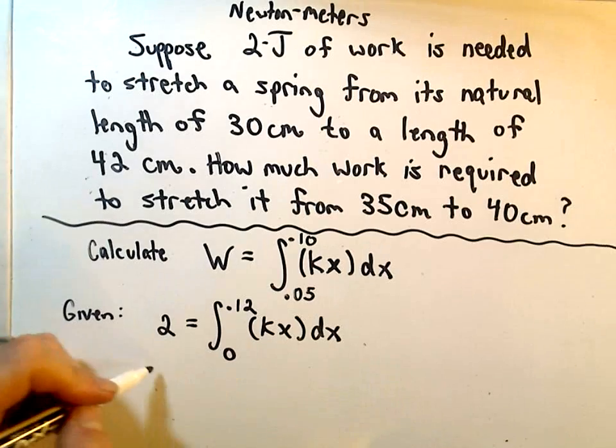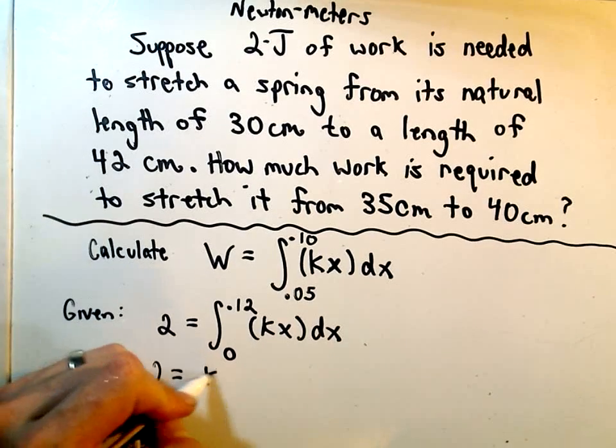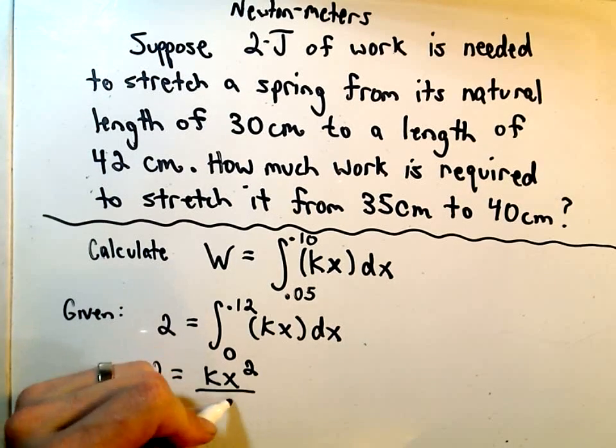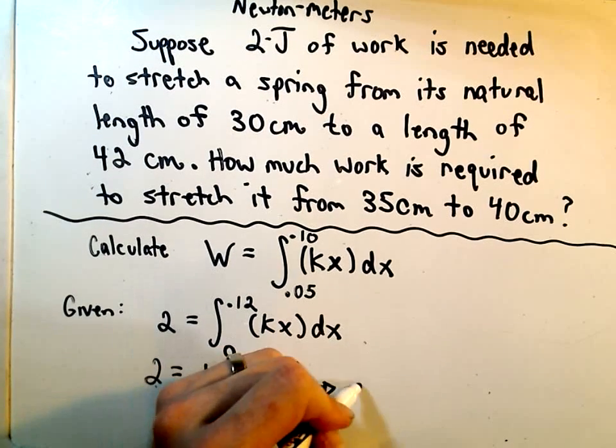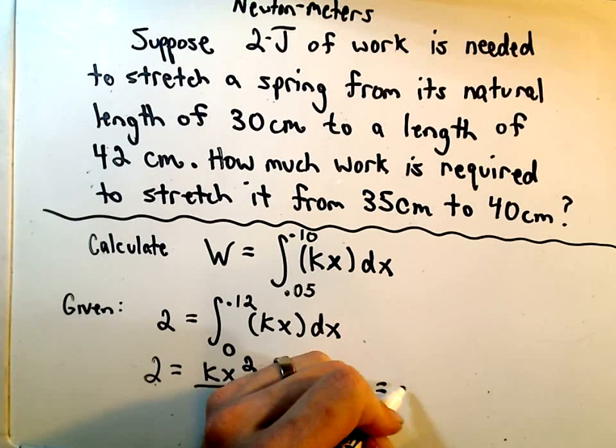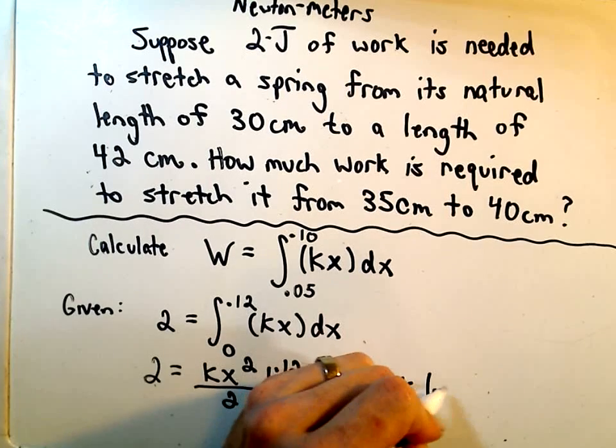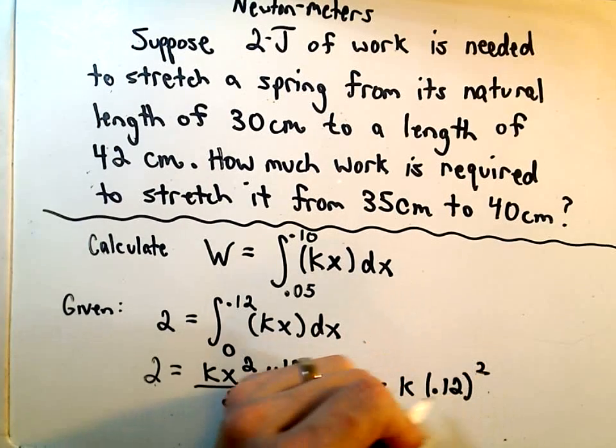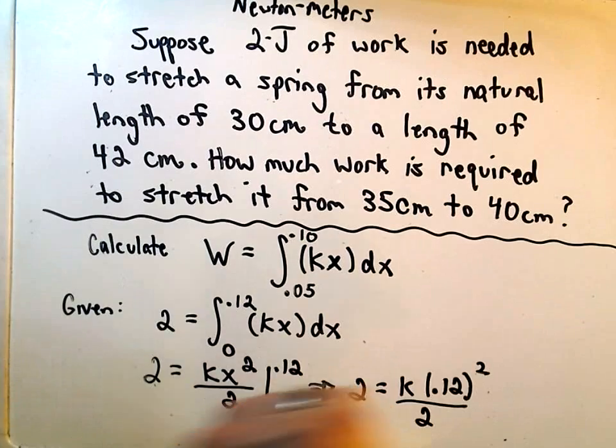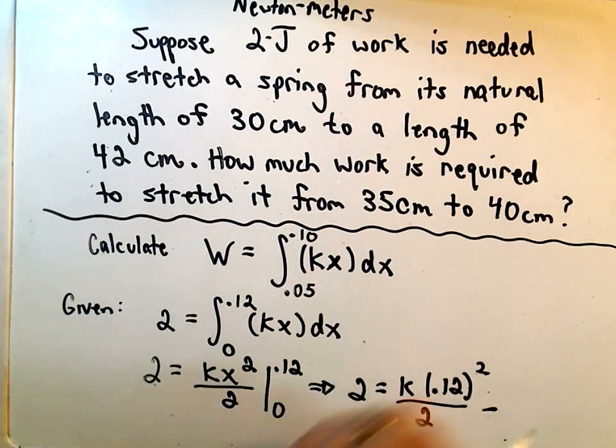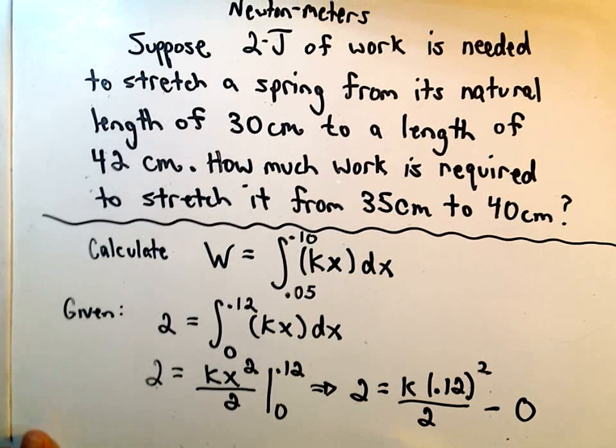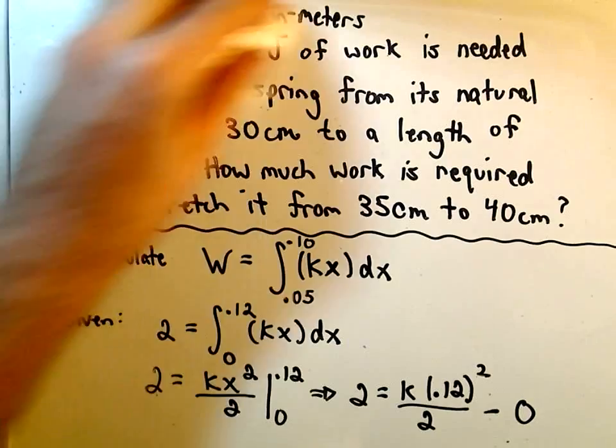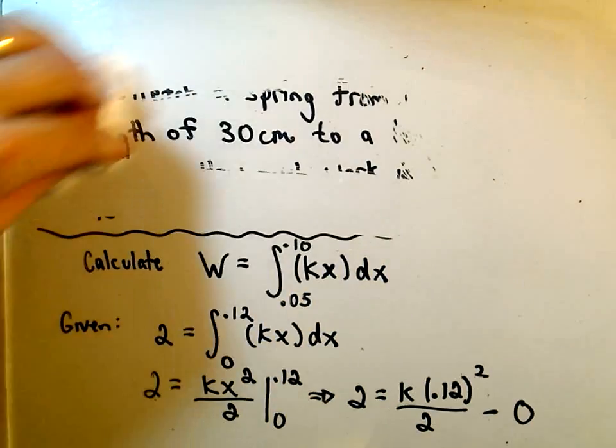So if we integrate, we'll simply get kx squared over 2. We'll have to plug in 0 and 0.12. So we're going to get 2 equals k times 0.12 squared over 2 minus, if we plug in the lower limit of integration, we're simply going to get 0. If we simplify this down, let me erase my original problem since we have the crucial stuff written down.